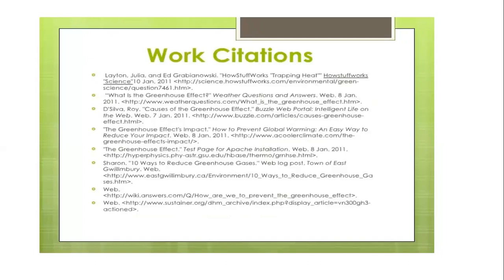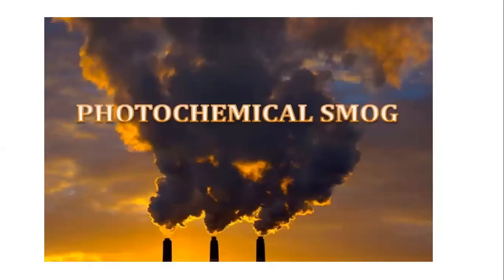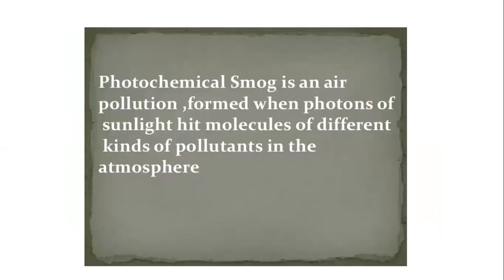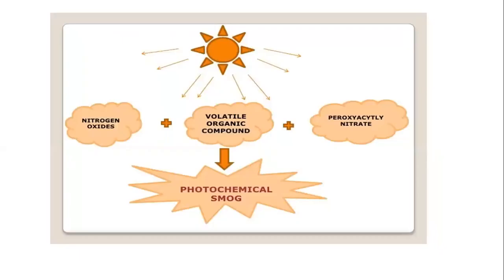The next chapter is photochemical smog, a major effect of air pollution. Photochemical smog is an air pollution form when photons of sunlight react with molecules of different kinds of pollutants in the atmosphere — including nitrogen dioxide, volatile organic compounds (VOCs), and peroxyacetyl nitrate — producing photochemical smog.